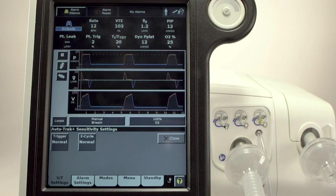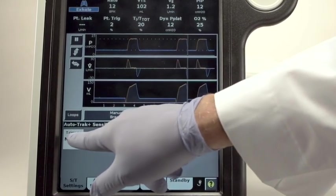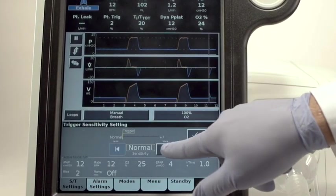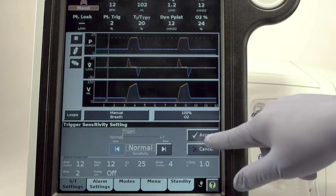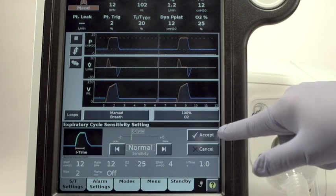AutoTrack lets you spend more time with patient care and less time fine-tuning the ventilator. The Plus function allows you to make small adjustments to the trigger and cycling for patients with extreme needs, such as small pediatric patients or severe COPD adult patients. It's important to mention that we have not made AutoTrack any less automatic.